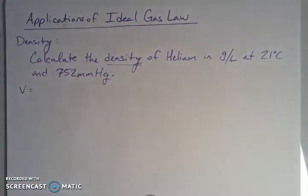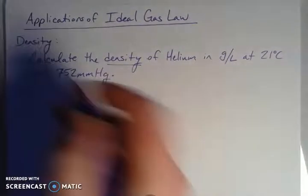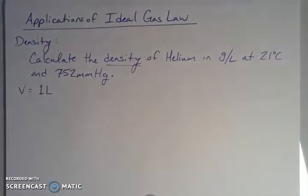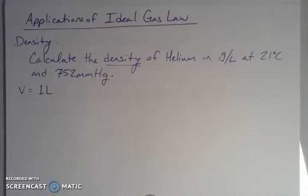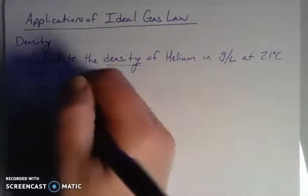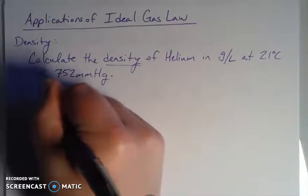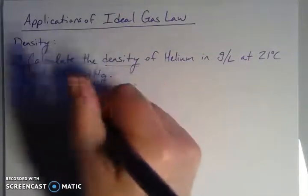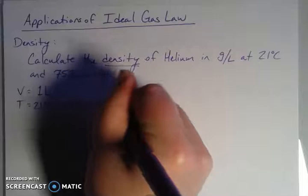Listing out our variables: per liter means per one liter, so V = 1 L. We're given a temperature of 21 degrees Celsius, which we need to convert to Kelvin. Adding 273.15 and rounding to the ones place gives us 294 Kelvin.